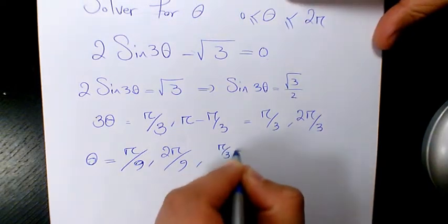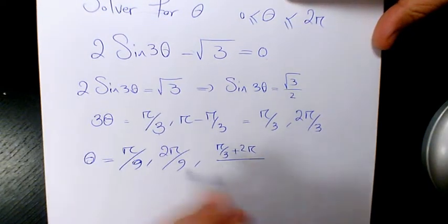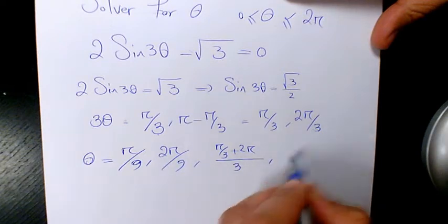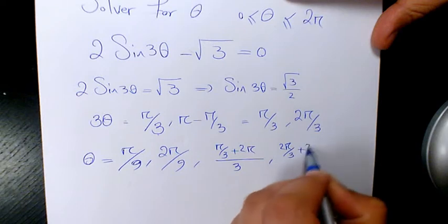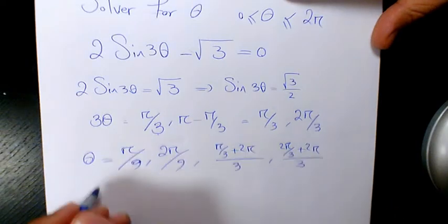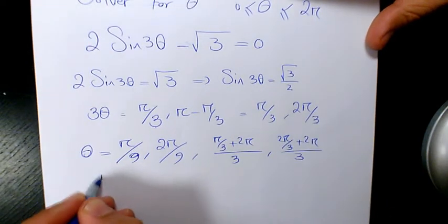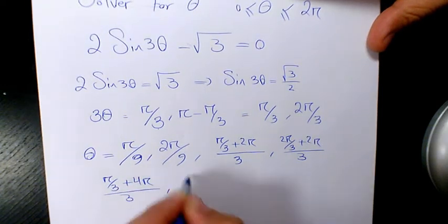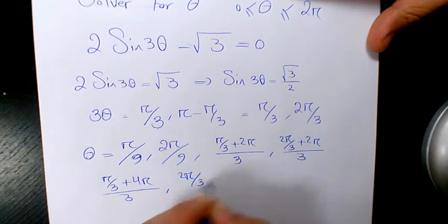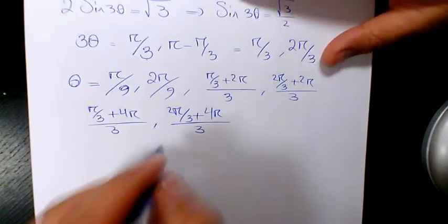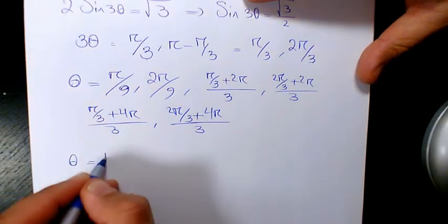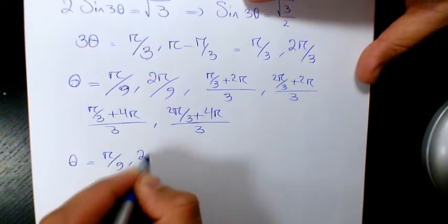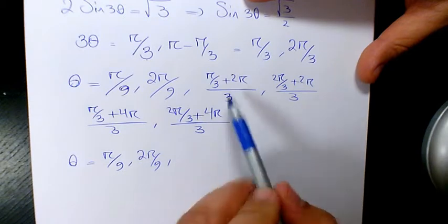Then we have π over 3 plus 2π over 3, π, and 2π over 3 plus 2π over 3. Then it's going to be π over 3 plus 4π over 3. So θ is going to be π over 9, 2π over 9, and here we're going to have 7π over 9.